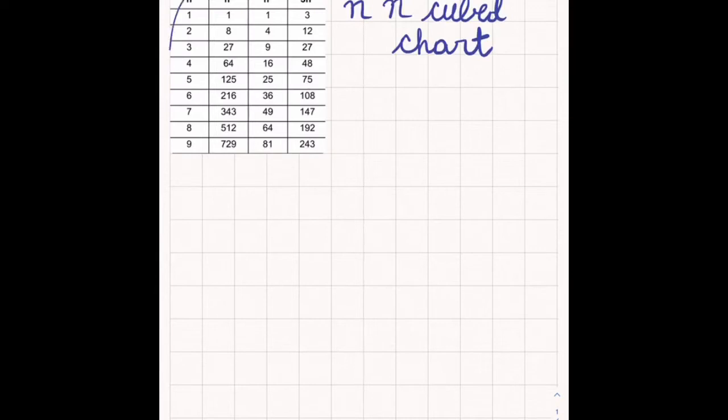So in this first column you see here, we have N. We have significant digits 1 through 9. So we call these significant digits.